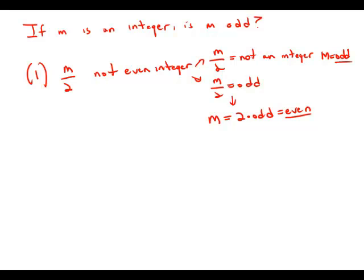So the statement allows for some possibilities where m is odd, some possibilities where m is even. So the information in the statement by itself is not sufficient to answer the question. Statement number one is insufficient.